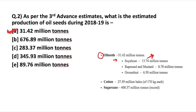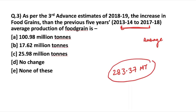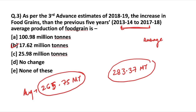Rapeseeds and mustard have an estimated production of 8.78 million tons. You can pause the video and take a screenshot of the table to help remember these numbers. The next question asks about the increase in food grains production compared to the previous five-year average. Food grains are estimated at 283.37 million tons, an increase of 17.62 million tons over the previous five-year average of 265.75 million tons, giving the current estimated production of 283.37 million tons.